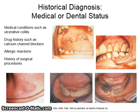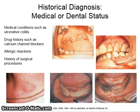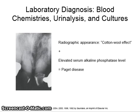A historical diagnosis needs to include the medical or dental status of the patient. You need to include medical conditions such as ulcerative colitis, drug histories such as calcium channel blockers, allergic reactions, and history of surgical procedures that could help explain any of the findings noted during a clinical exam. In some cases, either clinical or radiographic findings may require further laboratory testing in order to come up with a definitive diagnosis.